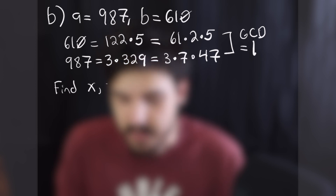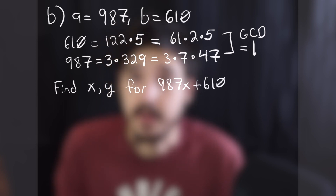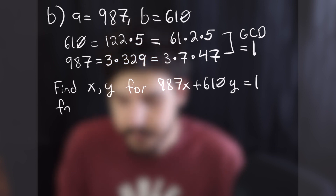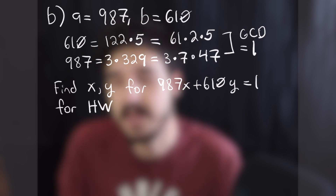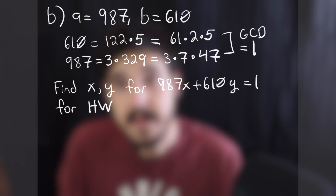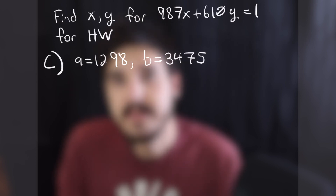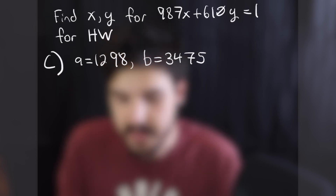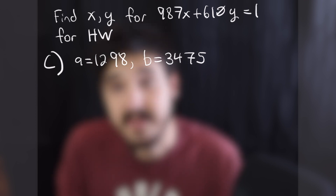If you want to go through the extended Euclidean algorithm for that one, I did do it but I'll leave it for homework — post in the comments what you got. For problem 1c, I'm also only going to find the GCD for the same reason; the extended Euclidean algorithm is quite long. This one also lends itself well to factoring, since we can very easily take a 2 out of 1298 and a 5 out of 3475.